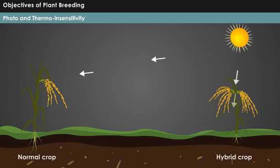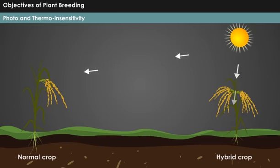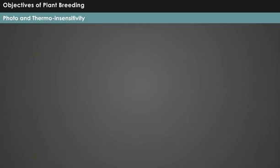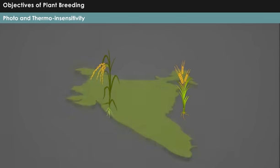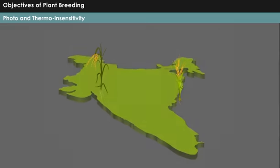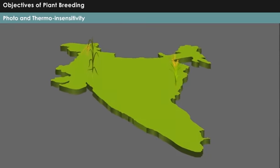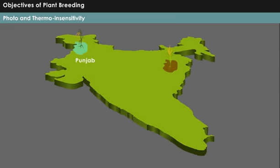Photo and thermo insensitivity: Including photo and thermo insensitivity characteristics in crop varieties such as wheat and rice has allowed cultivation of these crops in new places. For example, rice is being grown in Punjab. On the other hand, wheat is cultivated in West Bengal.